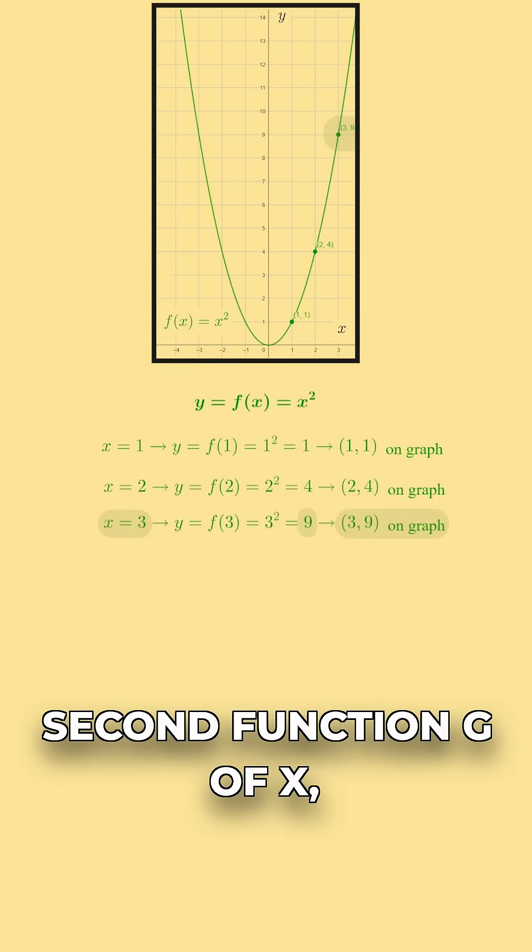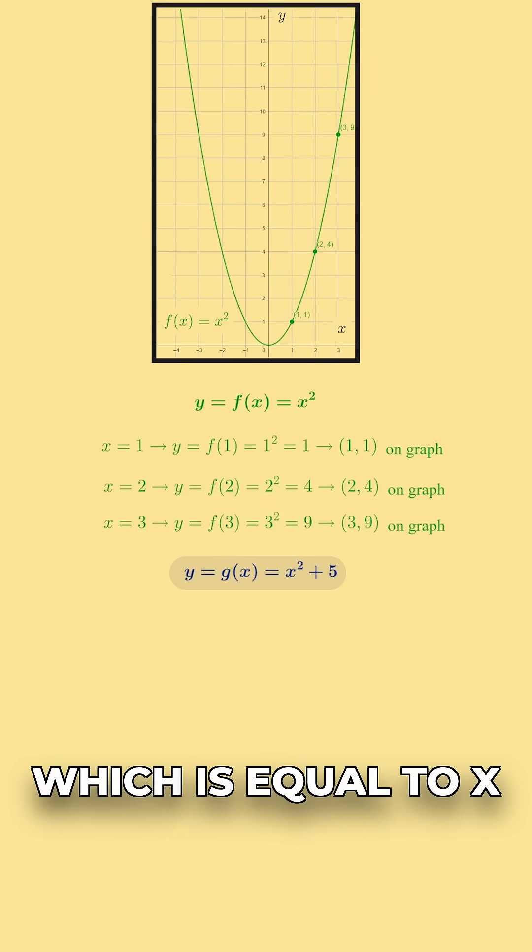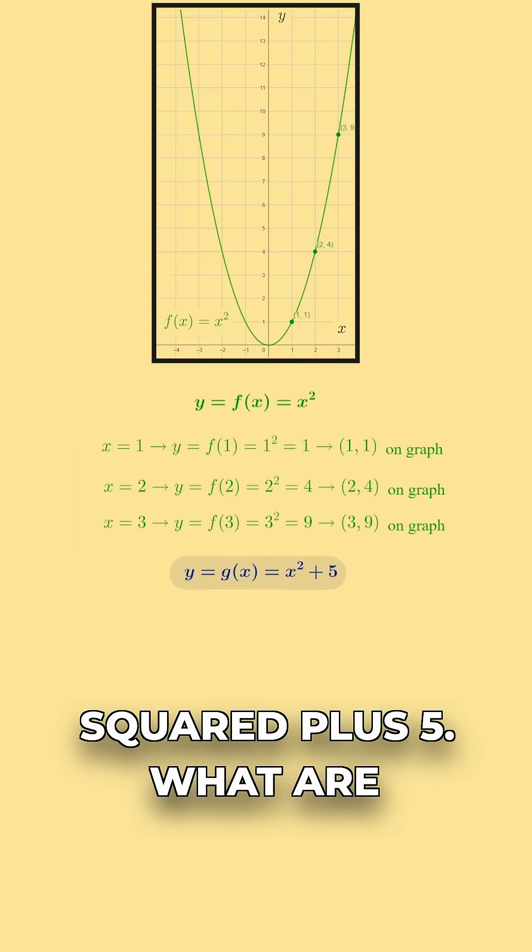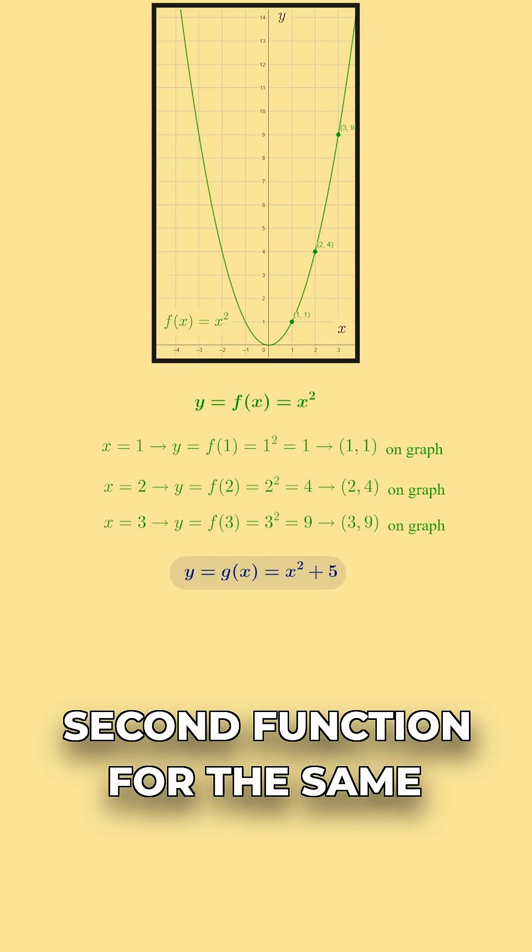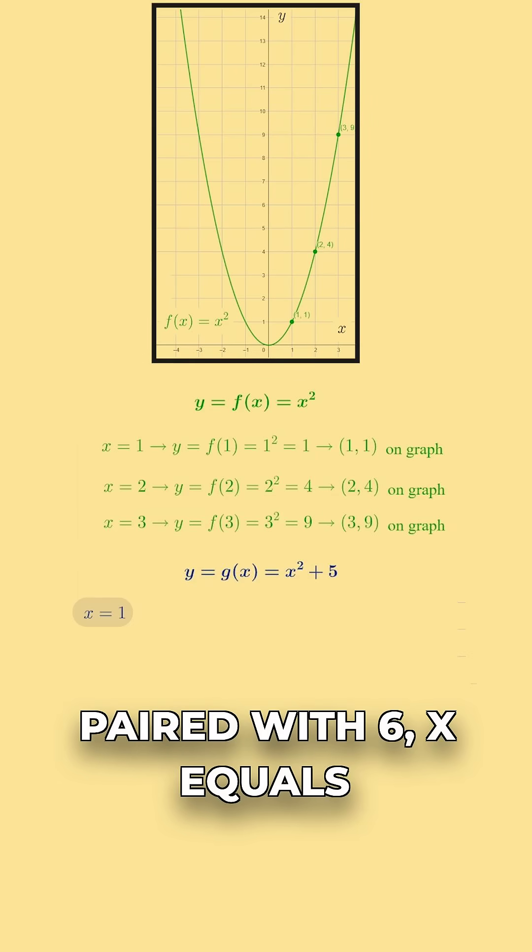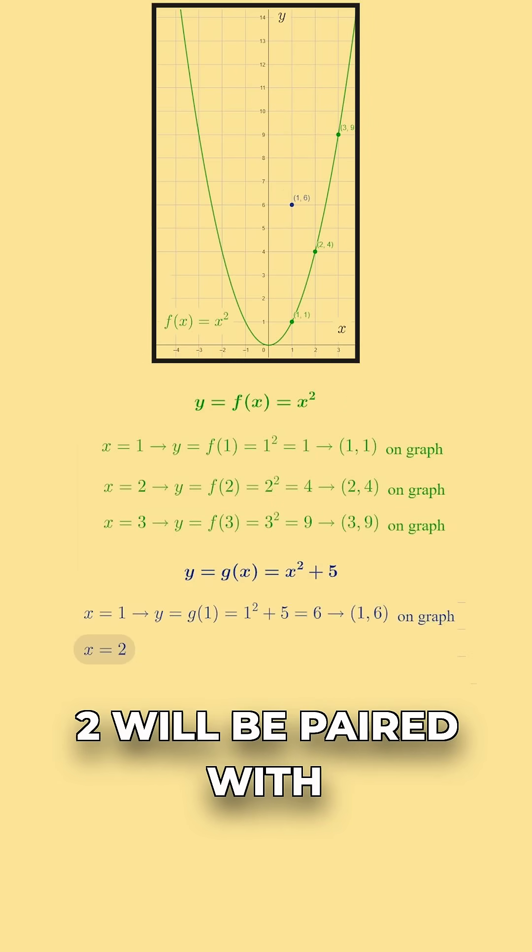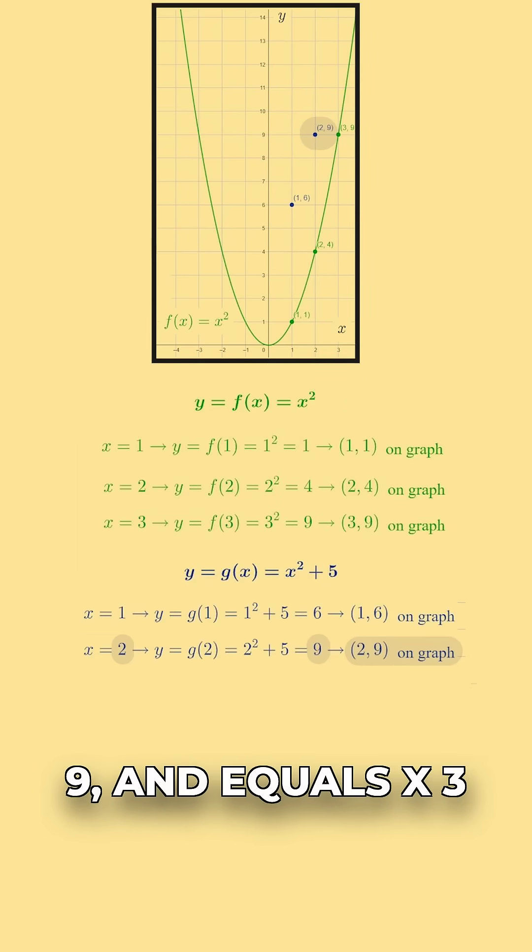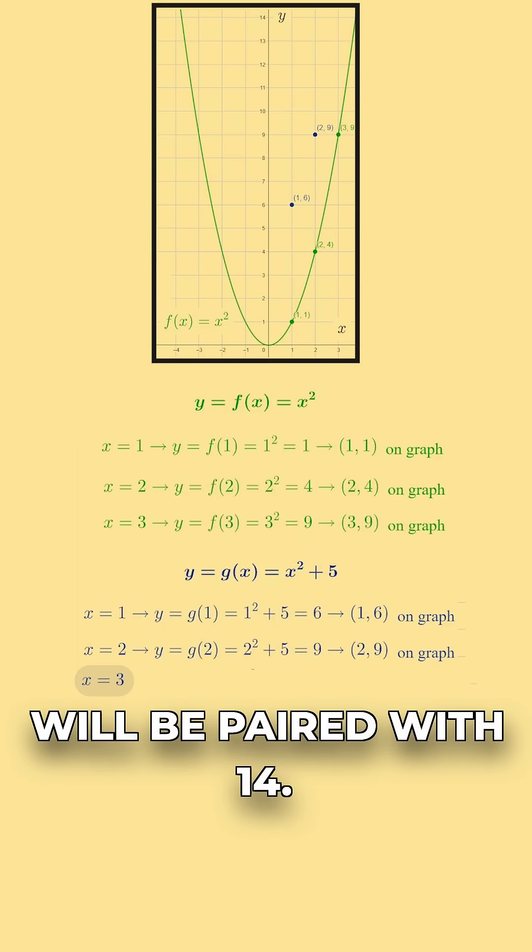Consider this second function, g(x), which is equal to x² + 5. What are the y values of this second function for the same three x values we selected? x = 1 will be paired with 6, x = 2 will be paired with 9, and x = 3 will be paired with 14.